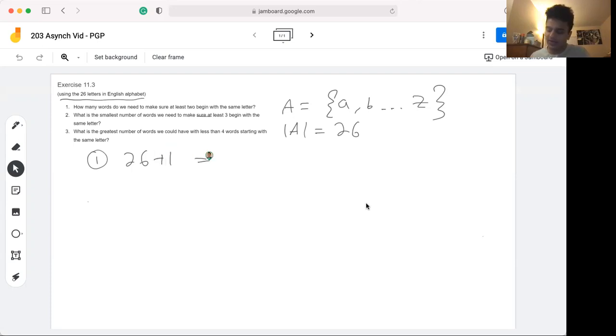Now applying a similar logic with number two: what is the smallest number of words we need to make sure at least three begin with the same letter? Well, the idea that we talked about before still applies. We could grab 26 letters and it's guaranteed that every single one of them could create a distinct word, meaning that we have no overlaps in terms of the starting characters.